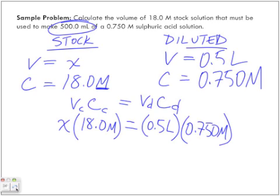We want to isolate for X, so we're going to divide both sides by 18.0 moles per liter. So what we have is 18.0 moles per liter here, cancel out, and we're just left with X.